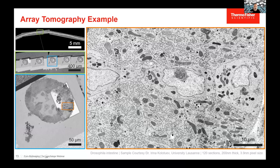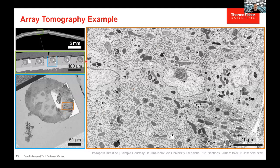For array tomography, the key is having software that is really robust in tracking areas of interest across many different sections. This is something we've worked on in our MAP software. This image shows a low-magnification overview of a section ribbon — slightly curved on a cover slip — with individual sections visible; a sample from Irina Kodutu from Lausanne University. You don't want to image the entire area at high resolution, so you focus on a region of interest and track it across all different sections, which is possible with array tomography combined with tracking software.